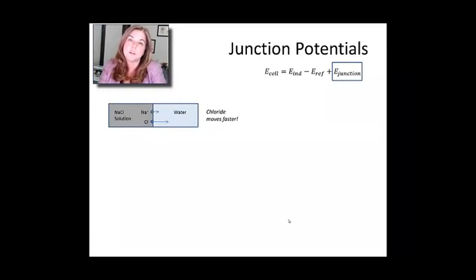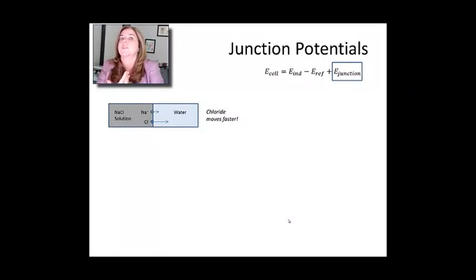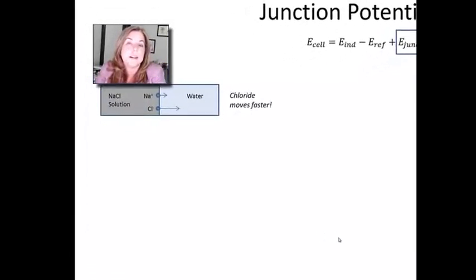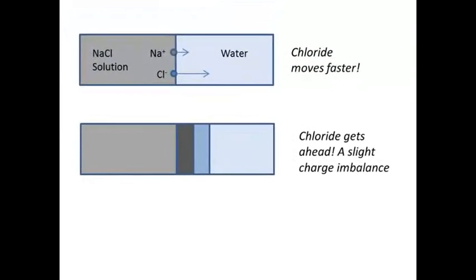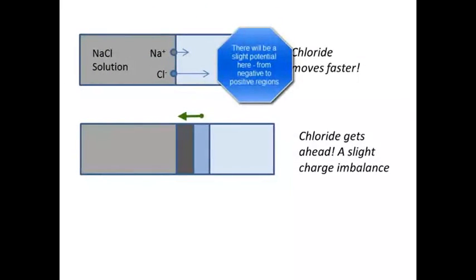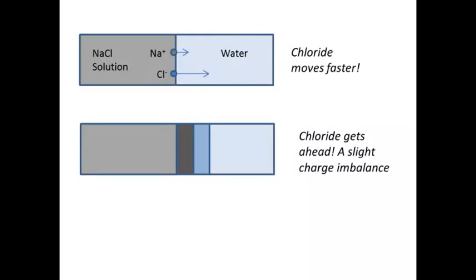So a junction potential happens whenever there's a solution A and a solution B that have different concentrations of electrolytes in them. So I show you this one example. Imagine you had a salt water solution coming up right against a fresh water solution. And there would momentarily be an interface before they fully mixed. Now, in that moment before they're fully mixed, and how they're going to fully mix, is that sodium and the chloride are both going to be diffusing into the water. But the mobility of chloride into water is actually higher than the mobility of sodium. So chloride is going to move faster into that water. So if you imagine a race going on, the chloride is going to get ahead of the sodium. And so you're going to have a region that's depleted in chloride, because it's moved ahead, and has excess sodium, and then a region that's negative because it's got excess chloride.